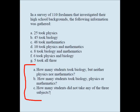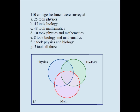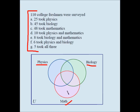We're going to use a Venn diagram to solve this problem and we're going to start with something like this. I have a circular set for physics, a circular set for biology, a circular set for mathematics. These are the people who took mathematics, these are the people who took physics, these are the people who took biology.